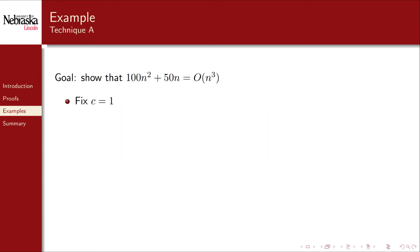We'll work on the same example as in the previous two plots. We want to show that 100 n squared plus 50 n is big O of n cubed. With technique A, we fix our positive constant c to be 1. We then want to show that for some n, the first function is bounded above by the second.